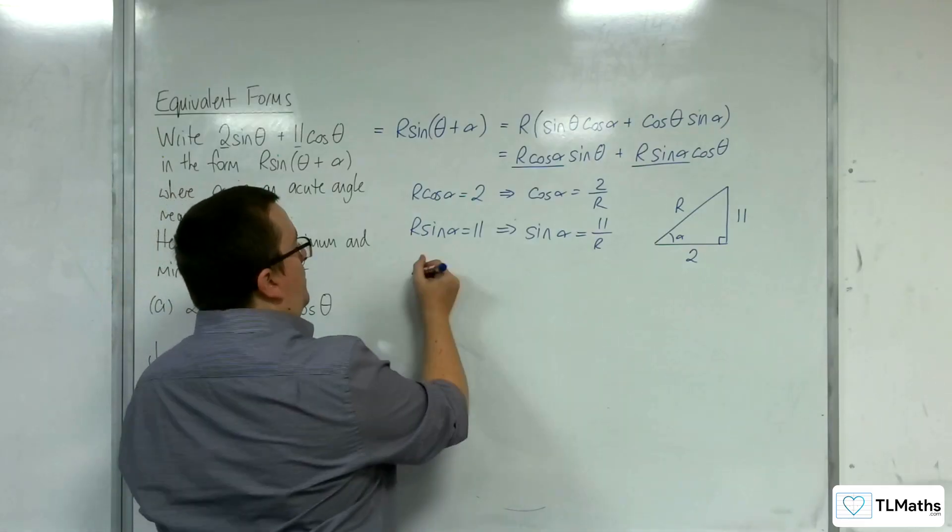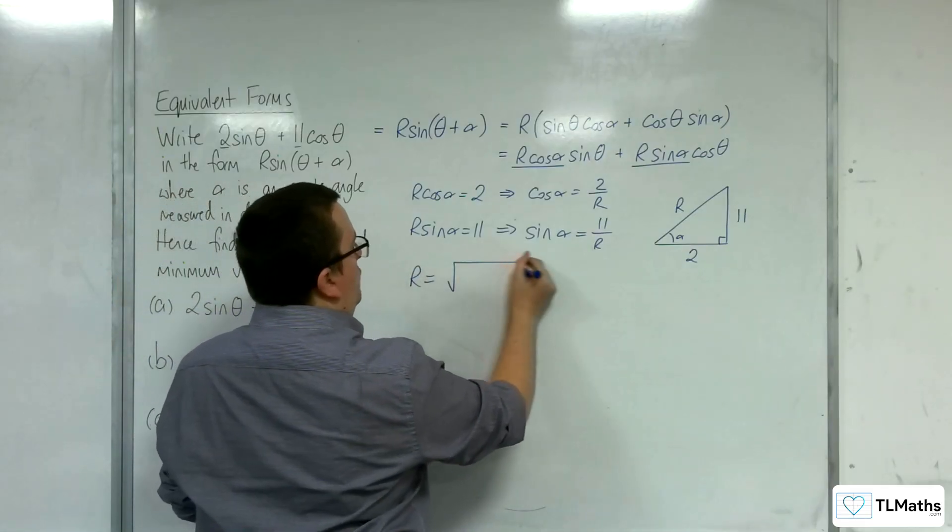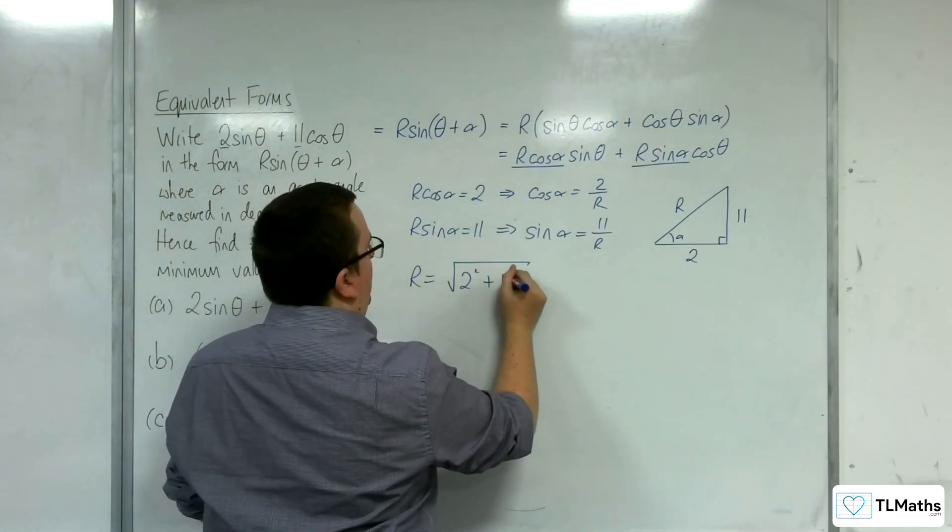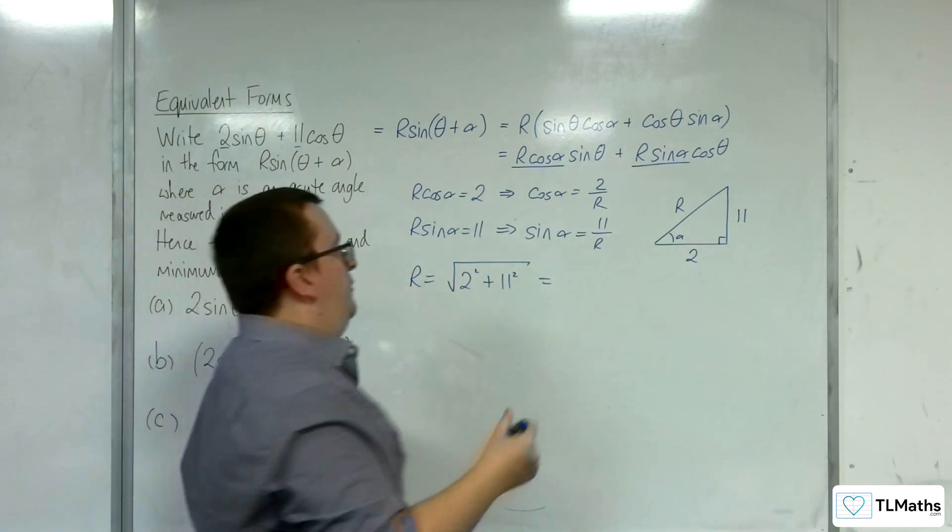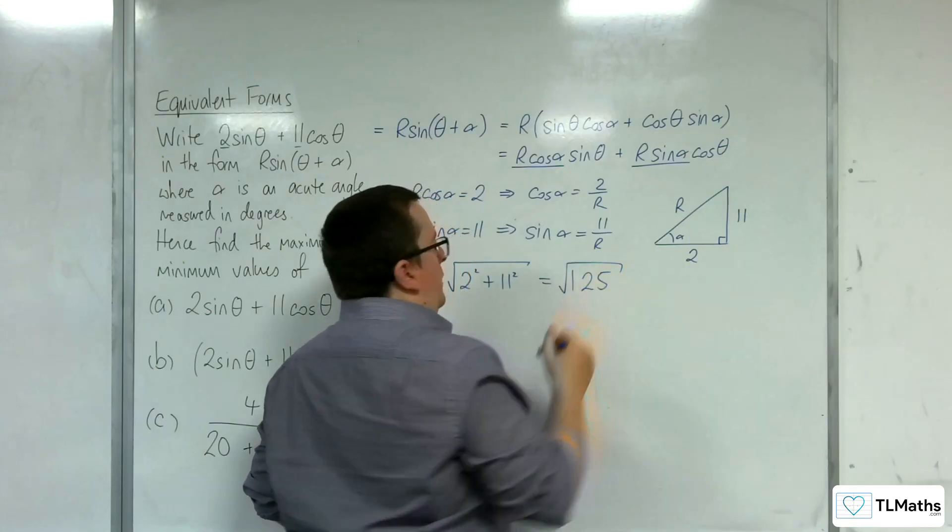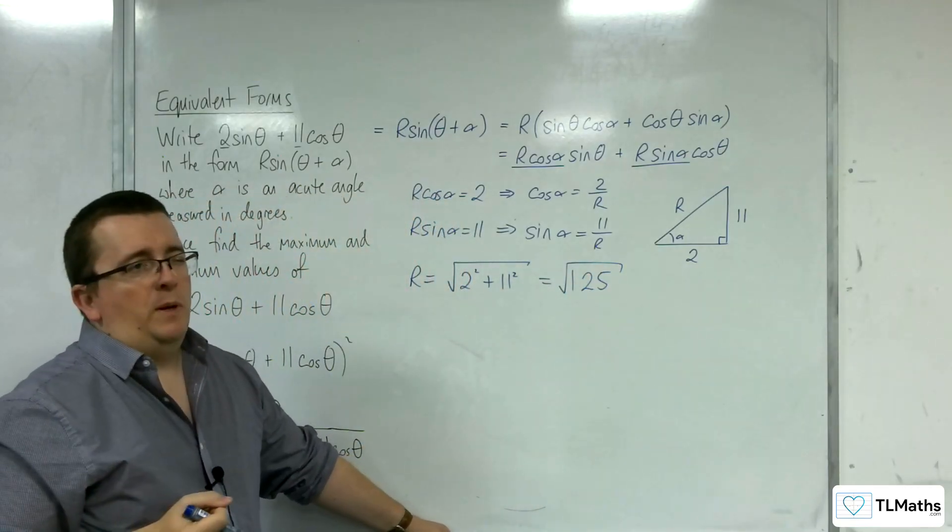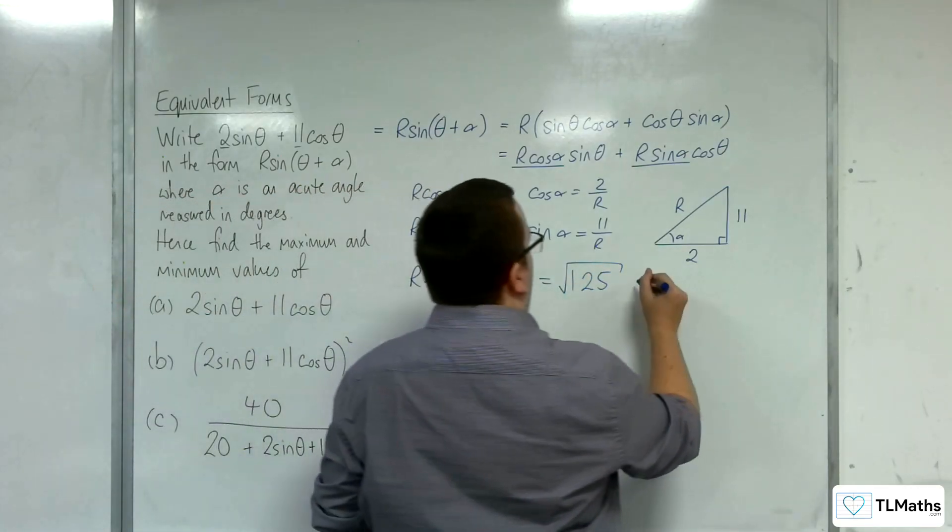We can work out R using Pythagoras. R is the square root of 2 squared plus 11 squared. So 11 squared is 121, plus 4, so 125. So 25 goes into that 5 times, so that's 5 root 5.